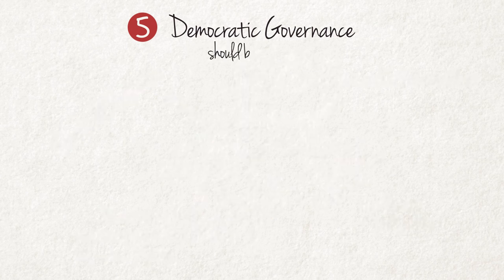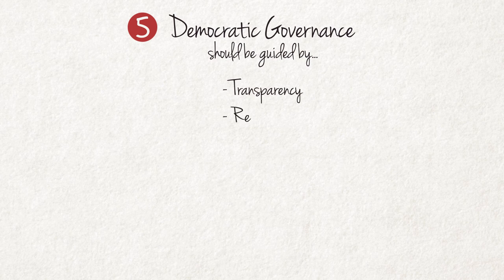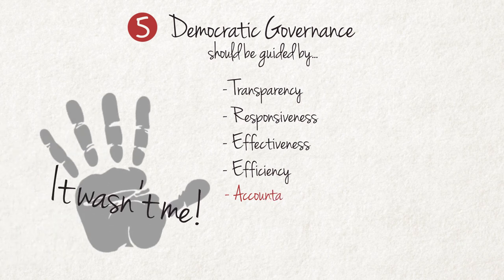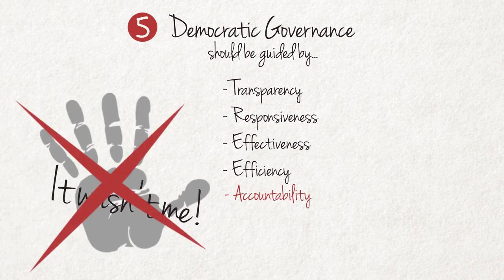Democratic governance should also be guided by the principles and practices of transparency, responsiveness, effectiveness and efficiency as prerequisites for accountability to the electorate.